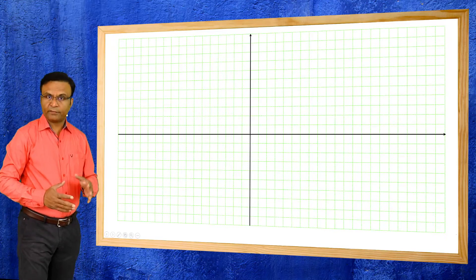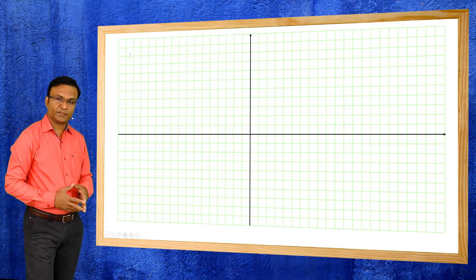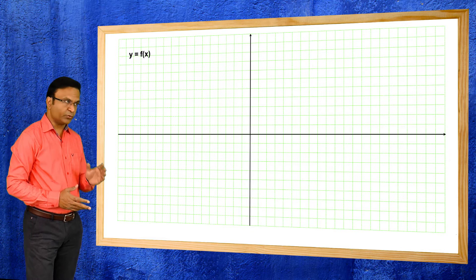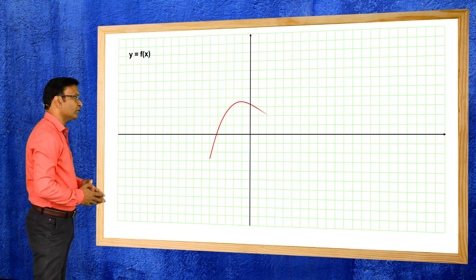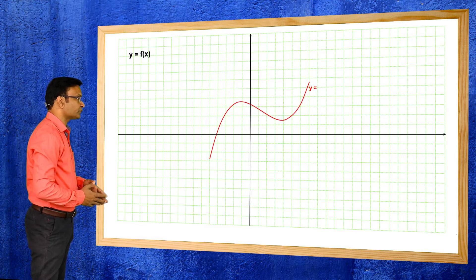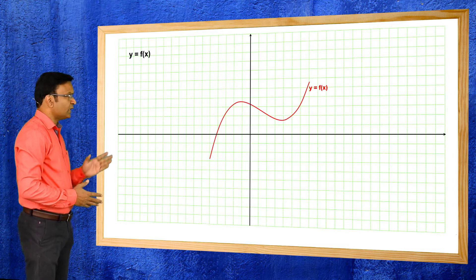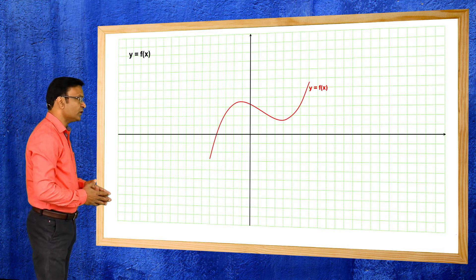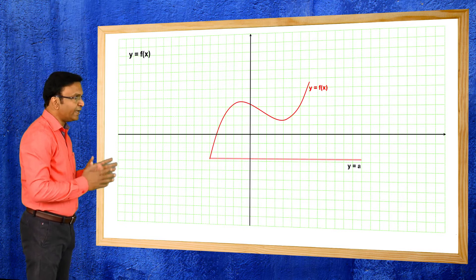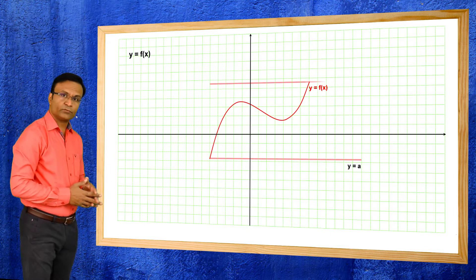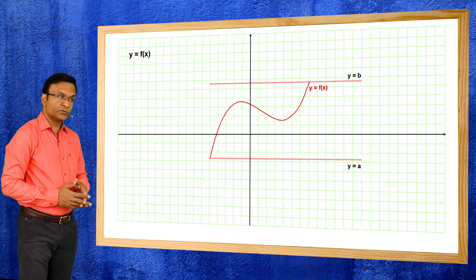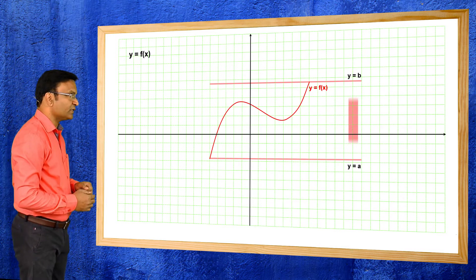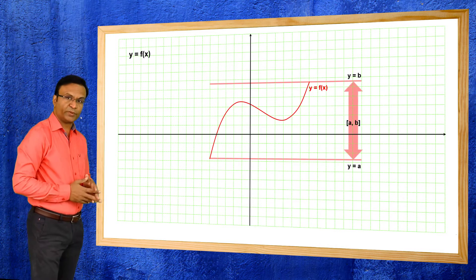Let us take a function y = f(x). Suppose this is the graph of the function. This graph lies between two horizontal lines y = a and y = b. So the range of this function is the interval a to b.